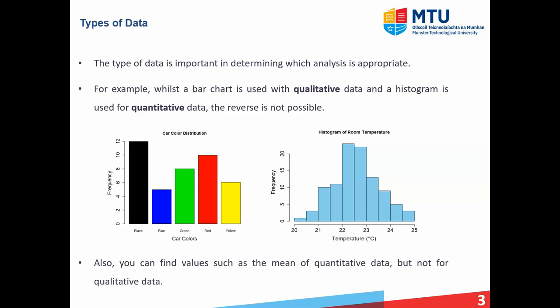Let's consider two simple examples. Firstly, in relation to graphics. Below, I have two images. On the left, I have a bar chart for car color and the right I have a histogram for room temperature. Now the bar chart on the left, that's used to represent qualitative data. Qualitative data is data that has a name. So in that example, we have car color, black, blue, green, and so on. Frequencies on the vertical axis. So for example, we have 12 black cars in this particular sample.